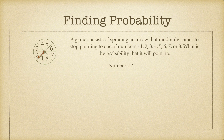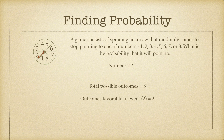The first question is: what is the probability that the arrow will point to number 2? The total possible outcomes is 8. The favorable outcome for our event — the arrow pointing to number 2 — is only one outcome, which is the number 2 itself. So the probability of the arrow pointing to number 2 is simply 1 divided by 8.